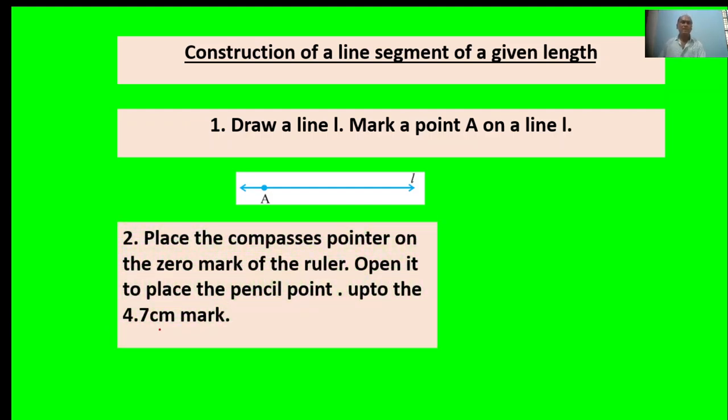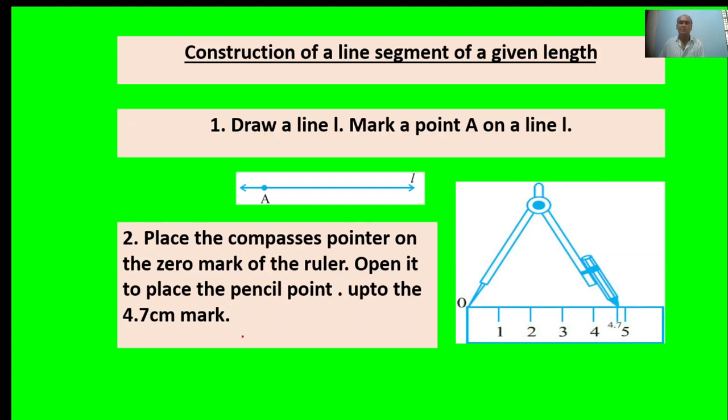Second point: Place the compass pointer on the zero mark of the ruler. Open it to place the pencil point up to the 4.7 mark. Here, the figure is given showing 4.7 centimeters.